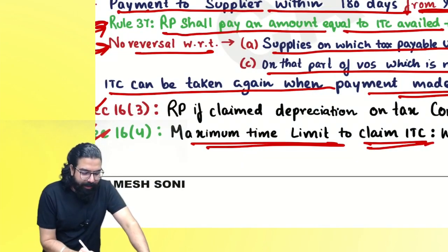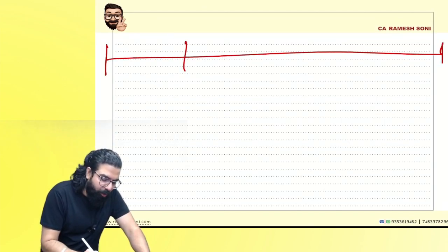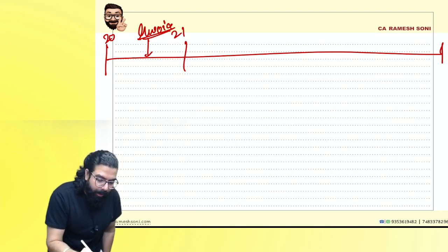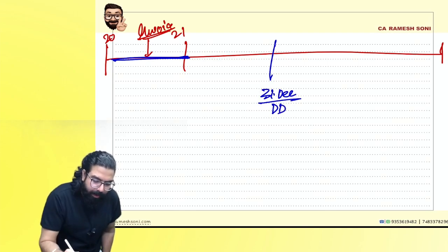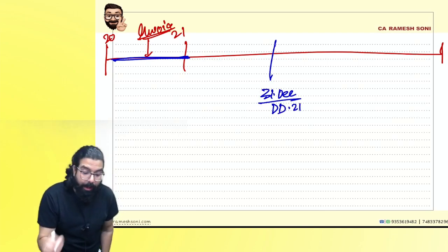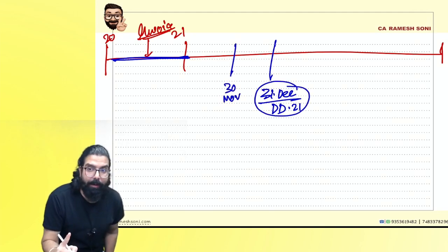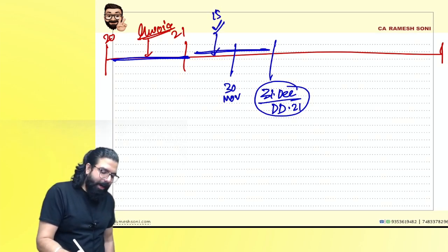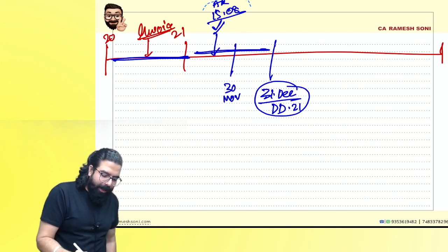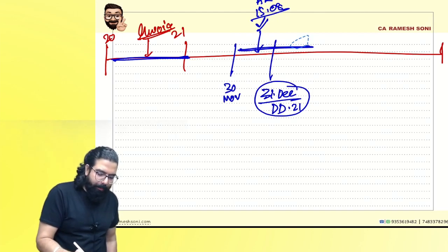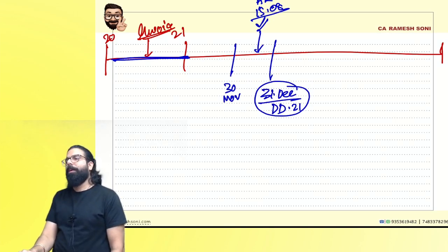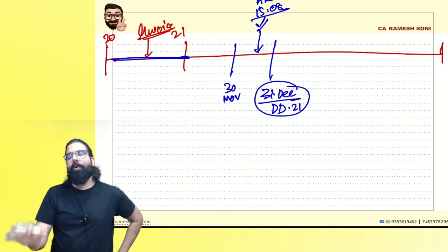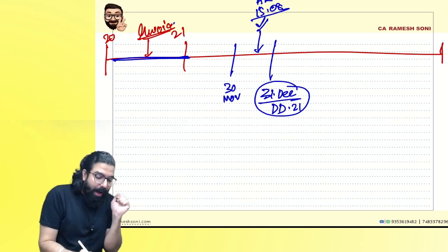Section 16(4) — Maximum time limit to take ITC: For any invoice or debit note, the last date to take credit is 30th November following the end of the financial year to which the invoice pertains, OR the actual date of furnishing the annual return — whichever is earlier. For example, an invoice of FY 2021-22: last date is 30th November 2022 or actual date of annual return filing, whichever is earlier. If annual return filed on 15th August — 15th August is the last date.